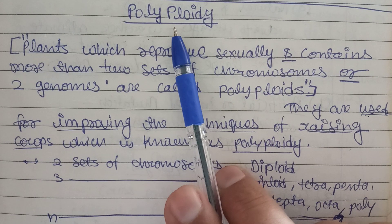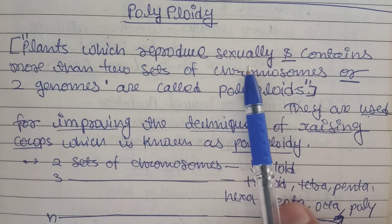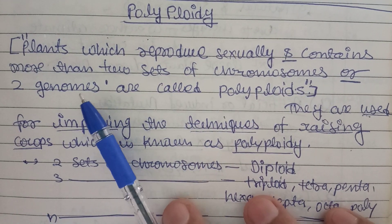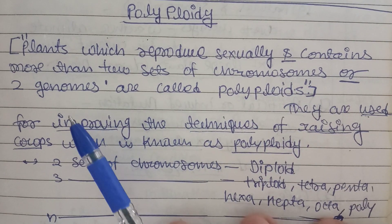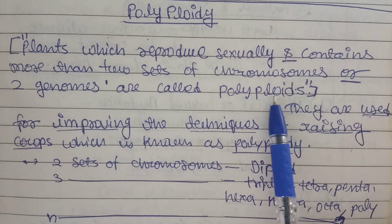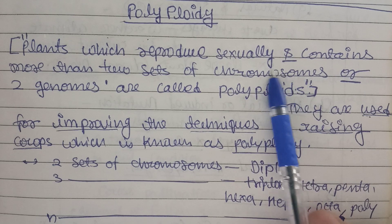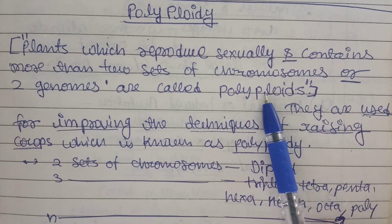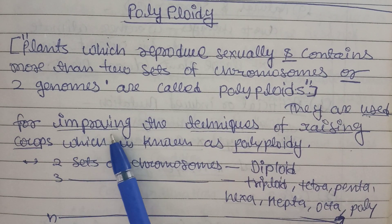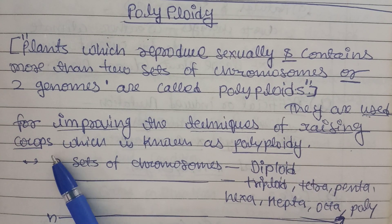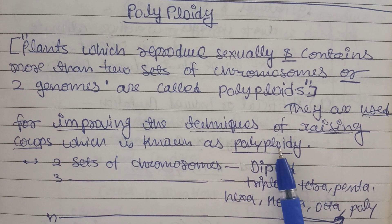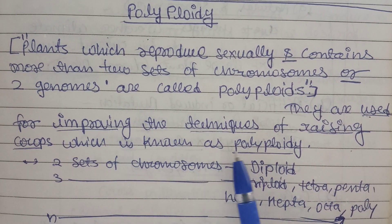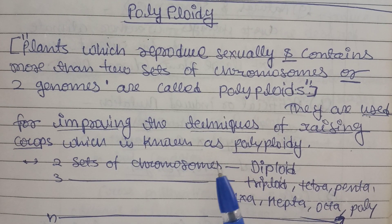The first technique we will discuss today is polyploidy. Plants which reproduce sexually and contain more than two sets of chromosomes are called polyploids. Polyploidy means having more than two sets of chromosomes or two genomes. These multiple chromosome sets are used for improving techniques of raising crops, increasing percentage yield — this is what polyploidy is about.